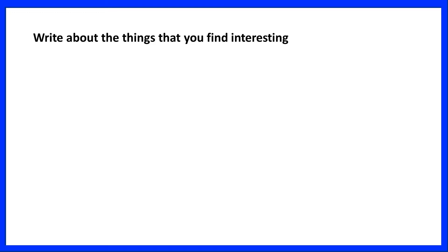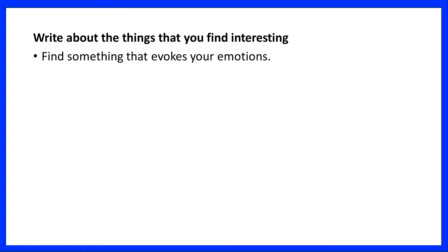Number three: write about the things that you find interesting. Look for content in the course literature that evokes your emotions. Find something that you're burning for, or disagree with. It's the perfect way to find motivation. Of course, you should always use sources of good quality, for example scientific articles published in academic journals and course literature.